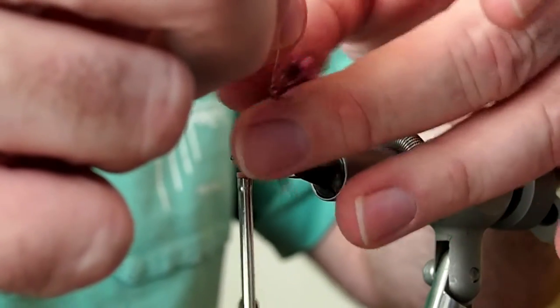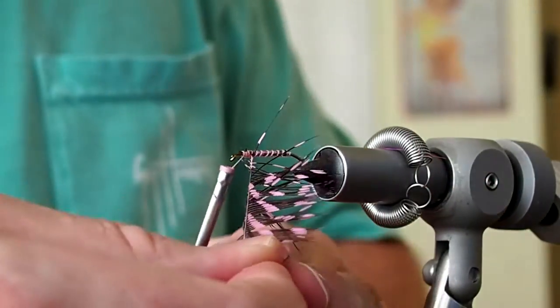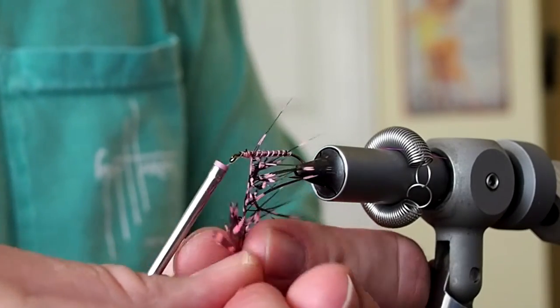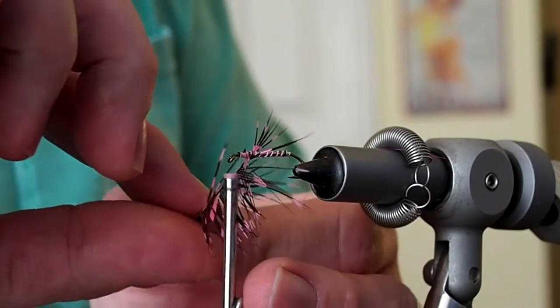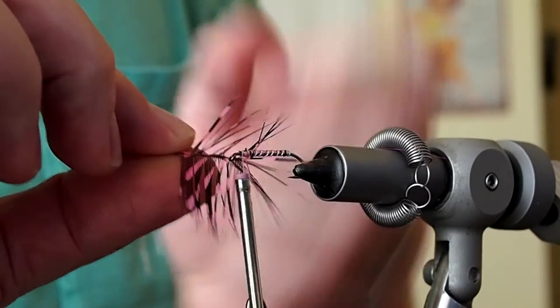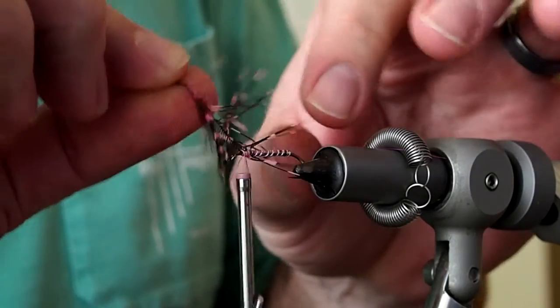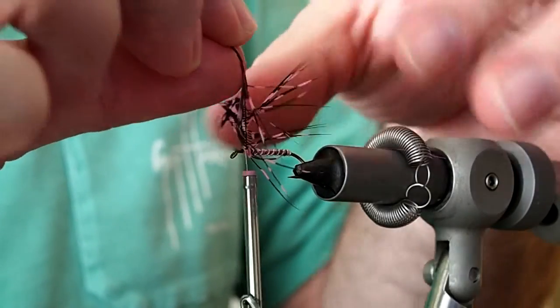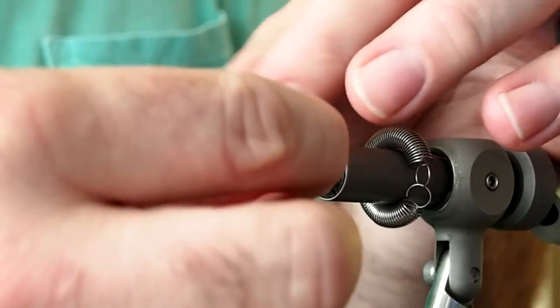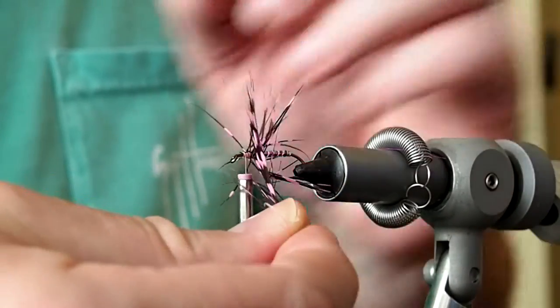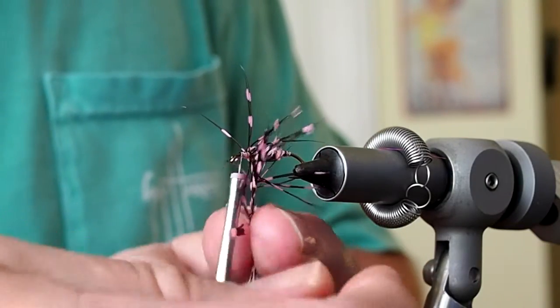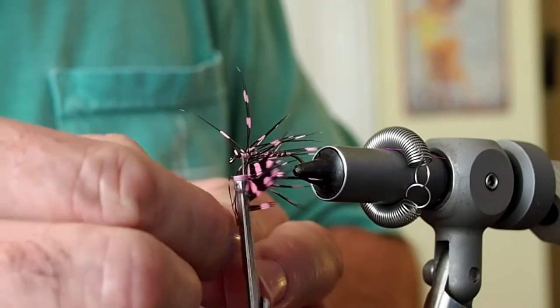And we're really just going to make maybe two wraps. You can tie them in as thick as you want but I prefer them kind of sparse. So that was one full wrap. And I'm going to take a second wrap. And again, you're just trying to stroke all those fibers back as you're doing this.